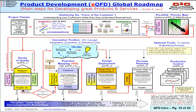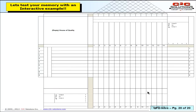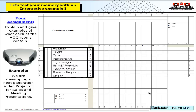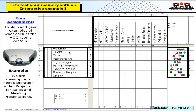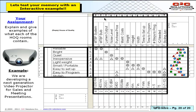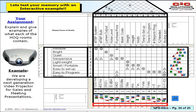Here's a blown-up example of a house of quality for a next-generation projector. On the left side are the customer needs. Then there are importance ratings, because not all needs are equally important. Then a competitive assessment showing how we stack up to our biggest competitors. We translate the needs into metrics — for example, 'bright' becomes lumen output and 'quiet' becomes noise level in decibels. We set targets for each metric, evaluate how those metrics impact customer needs in the relationships area, look at technical difficulty numbers, determine what direction to go to make customers happy, look at potential conflicts (that's what the roof is about), and calculate priority numbers at the bottom.